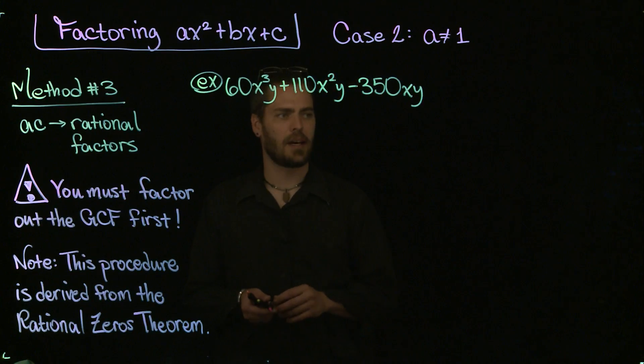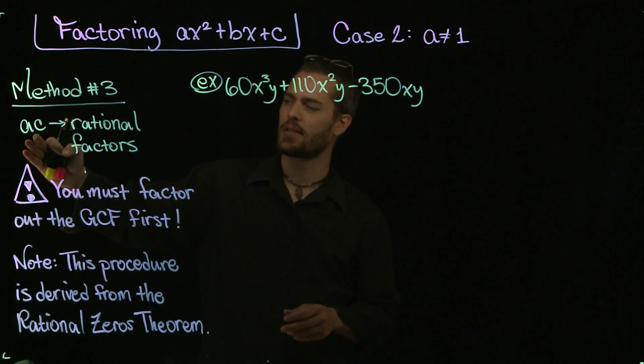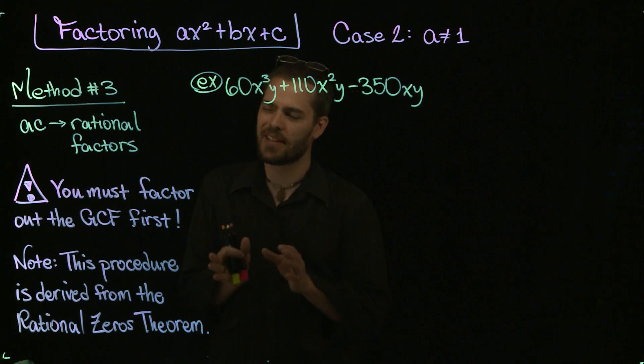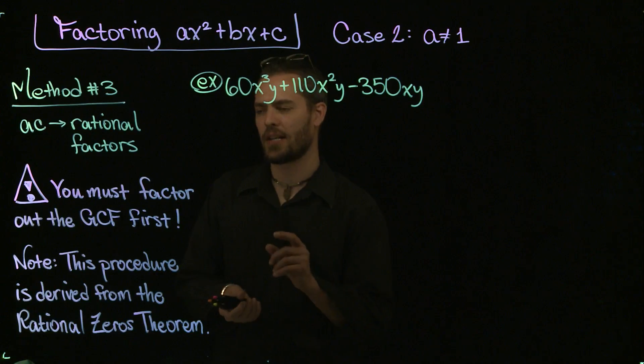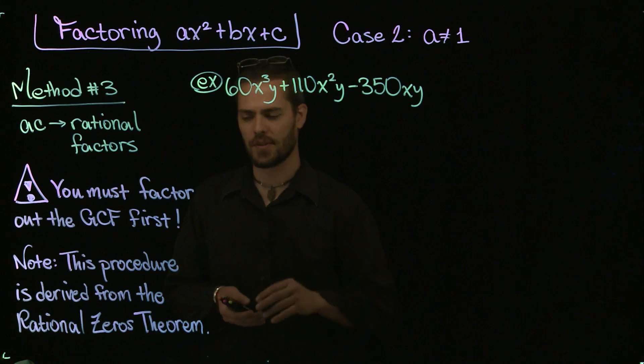What I would like to highlight at this point is Method Number Three: AC, multiply the leading coefficient and constant terms, and then we're going to end up with rational factors. Really, we're going to end up with rational numbers, fractions, within our binomial factors, and we're going to use those to produce our ultimate result.